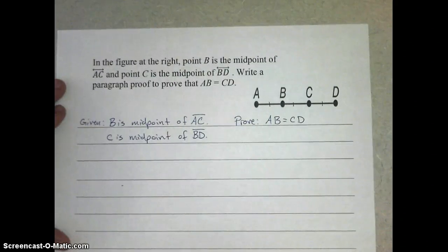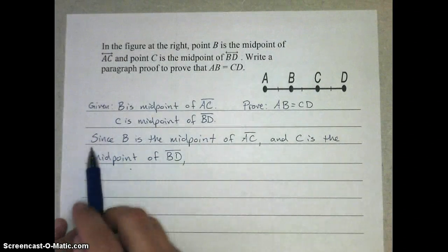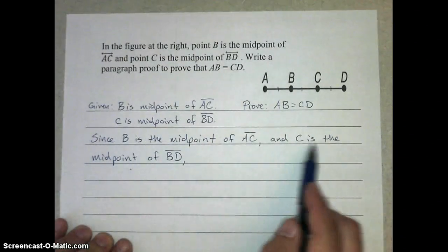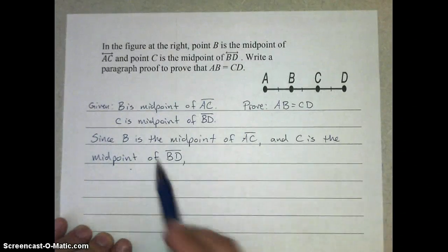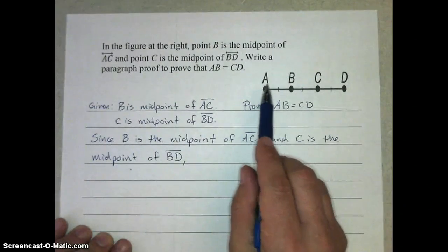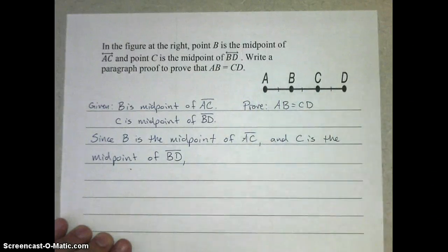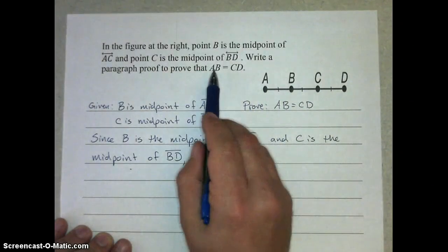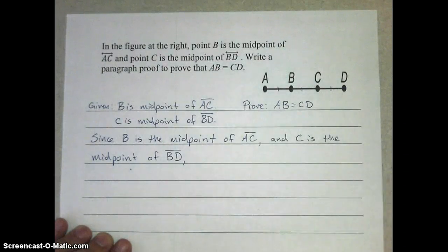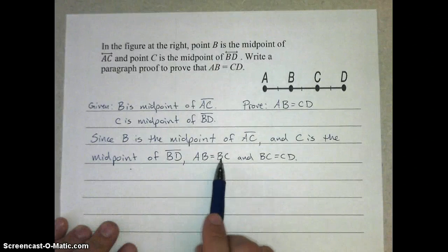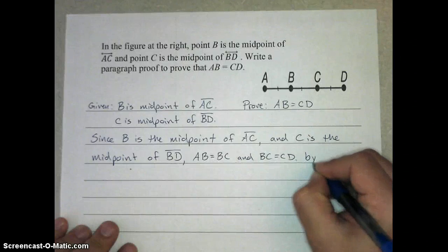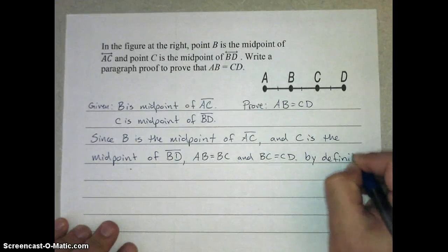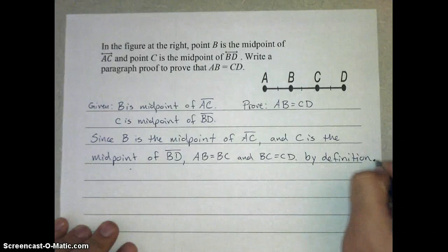So here's how we should start our proof. We want to begin by just stating the given. Since B is the midpoint of AC and C is the midpoint of BD, notice I'm using the word since because in my sentence I'm going to imply that something else follows that. Since I know that B is the midpoint of AC and C is the midpoint of BD, I can make another statement to eventually lead me to something talking about these lengths. Well, by definition we know AB equals BC and then BC also equals CD. We can just say by definition. That's where the period goes right there.